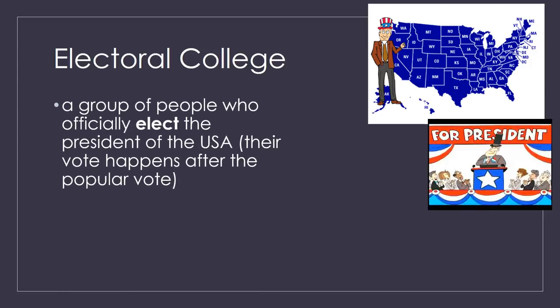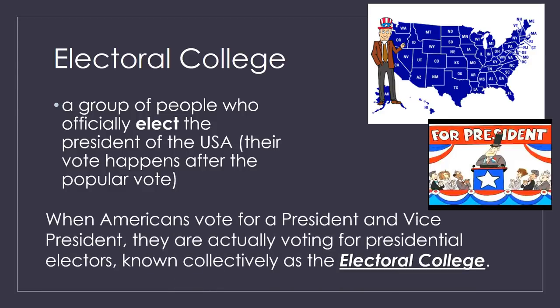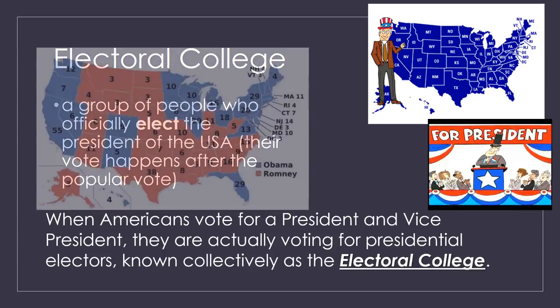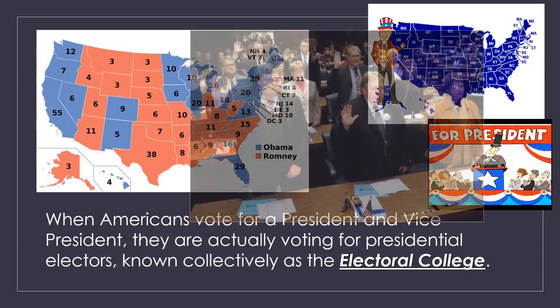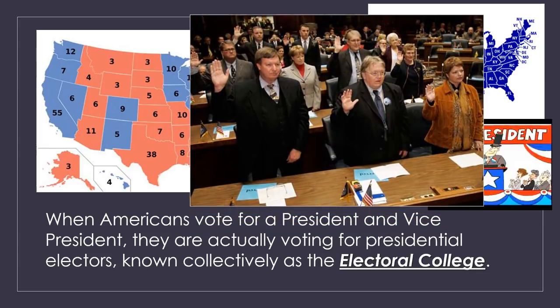Electoral College — a group of people who officially elect the President of the United States. Their vote happens after the popular vote. When Americans vote for President and Vice President, they are actually voting for Presidential Electors, known collectively as the Electoral College. Each state is given a value — it's kind of like a point system. Whoever gets the most points wins in each state, and that state's points go to that Presidential Candidate. The magic number is 270 electoral votes for the President to be elected.